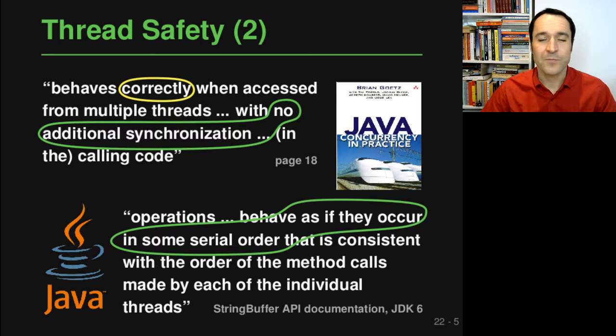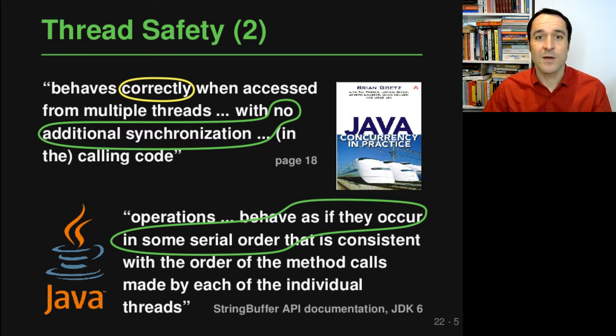We will use this definition of thread safety as a way to find bugs in thread-safe classes.